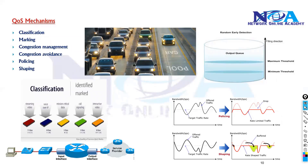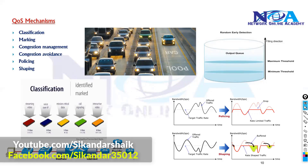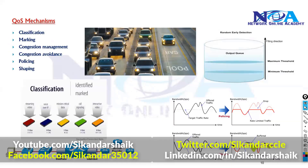These six tools include: classifying traffic, marking, congestion management, and congestion avoidance to manage congestion; policing to restrict traffic; and shaping to buffer extra traffic. We'll be covering each of these options one by one in detail as we progress through the topics.